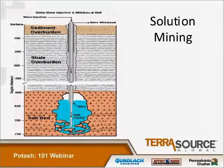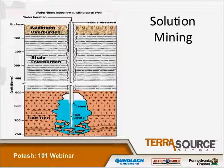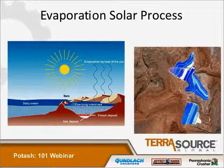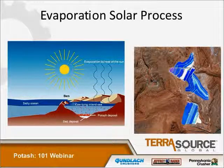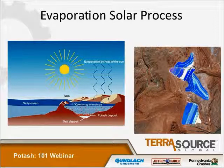Solution mining is when the potash is a lot deeper than it's worth conventionally mining — as much as 750 meters deep. Basically they drill a well, pump a brine down, bring it back up, dehydrate it, and further process it. Another way of mining for potash is evaporation, the solar process. The brine is gathered through solution mining or from ponds and lakes, allowed to sit in ponds where the sun dries them, and then the salt and potash mix is excavated and moved to the plant for further processing.